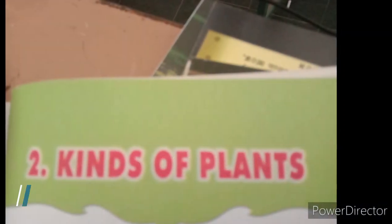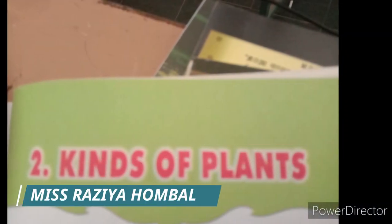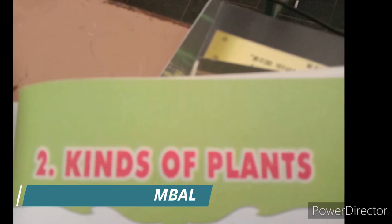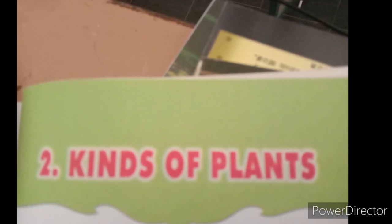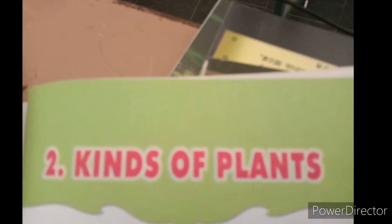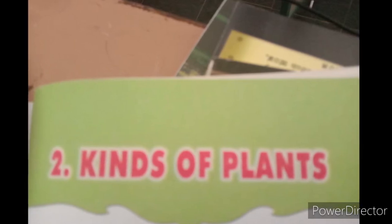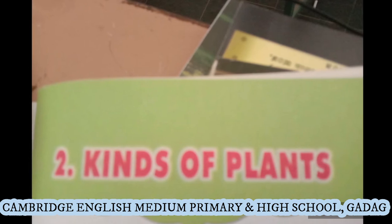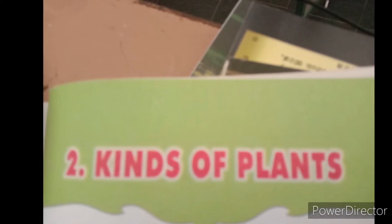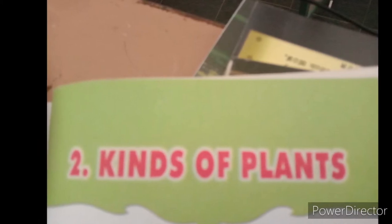Hello students, today I'm going to talk about kinds of plants. Plants are living things; most plants are green in color. They make our world colorful. We can see different kinds of plants around us — they differ in size and shape.